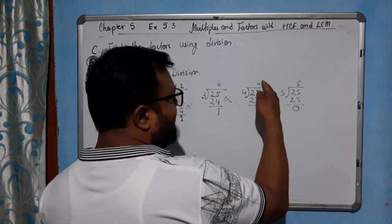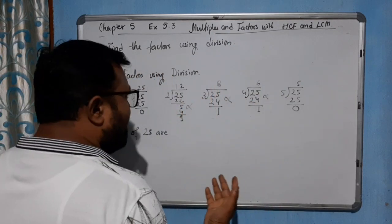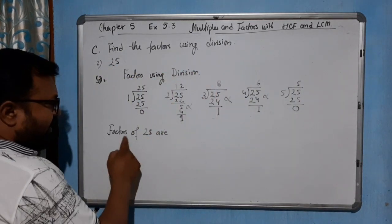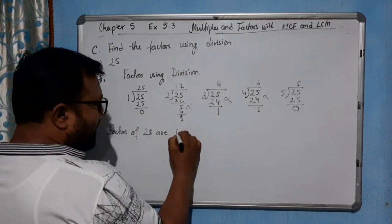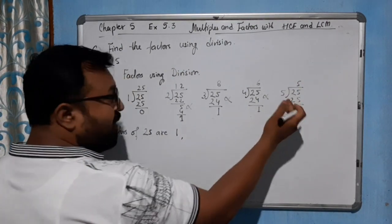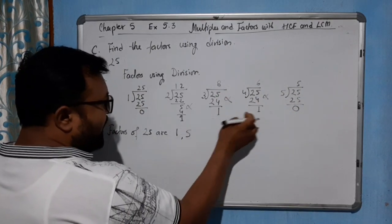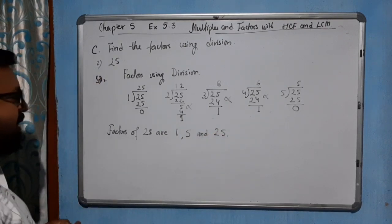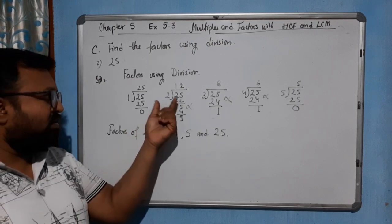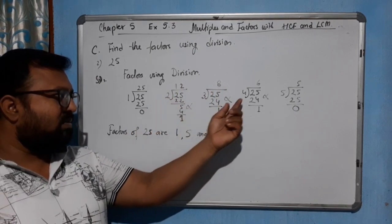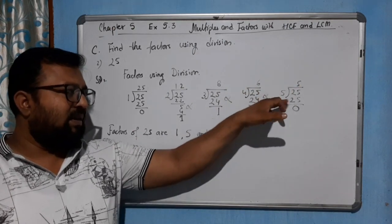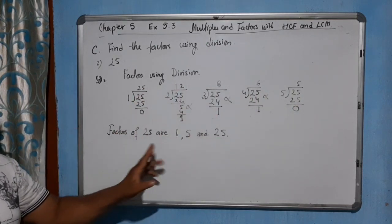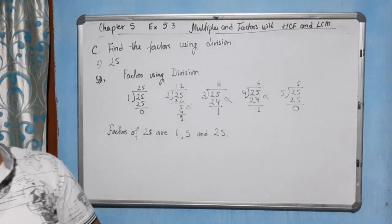By 6 we try, but 6 is already past the midpoint so we return. We have factor pairs: 1 and 25, and 5 and 5. Since both 5s are the same number, we use only one 5. So the factors of 25 are 1, 5, and 25.